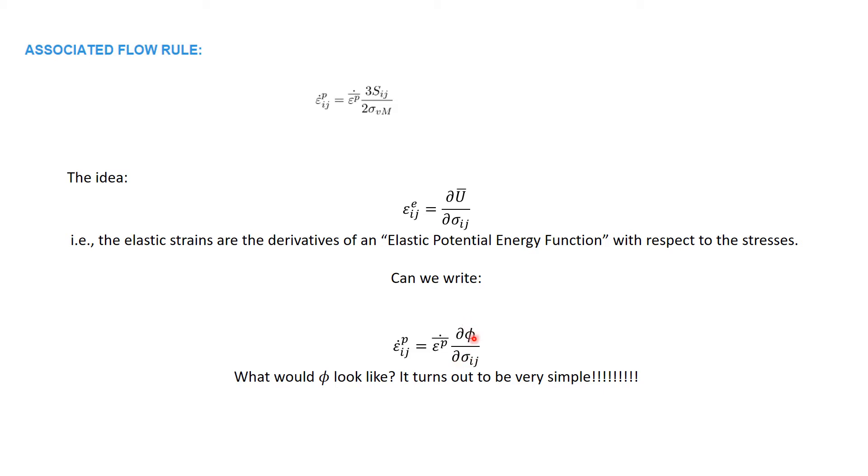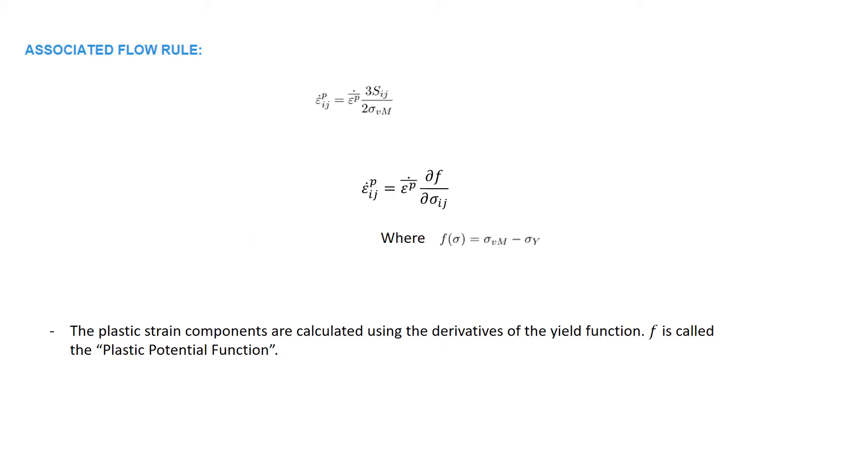Can we find a function φ such that ∂φ/∂σ_ij is equal to 3/2 times s_ij over σ von Mises? Yes, in fact the derivative of the yield function, given as σ von Mises minus σ yield, with respect to the stress component is equal to 3/2 times s_ij over σ von Mises.